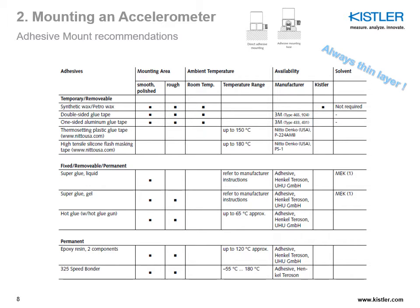The first in line are temporary removable methods: wax, double-sided glue tape, thermostatic plastic glue tape, high tensile, silicone flash masking tape. The table tells you where each can be used, which mounting area, what temperatures are supported, availability, manufacturer, and what solvent can be used for removal. Next are fixed removable or permanent glues: hot glue, super glue, with their temperature limitations. And last but not least, permanent methods for mounting at higher temperatures.